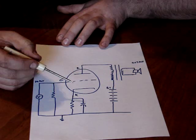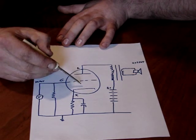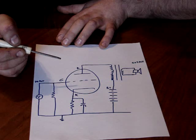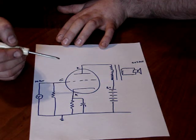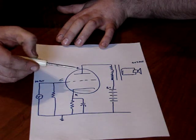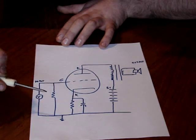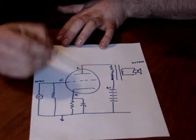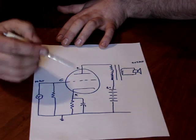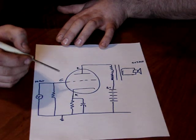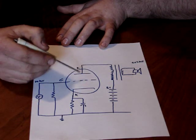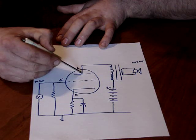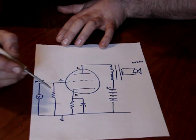Now class A is biased way above cutoff. It's biased usually near the center of maximum conduction and cutoff. So you have the greatest possible swing on your signal. But class A is less efficient because it's always conducting electricity. There's always current flowing between the cathode and the anode even when there's no signal.